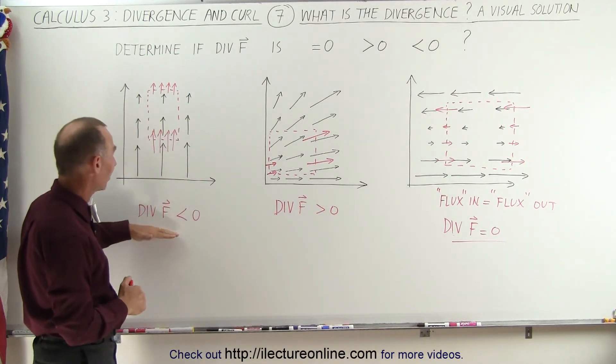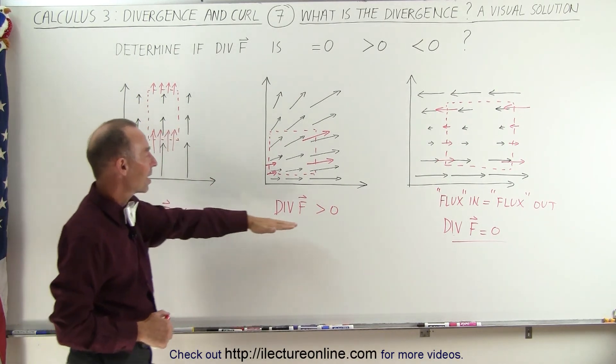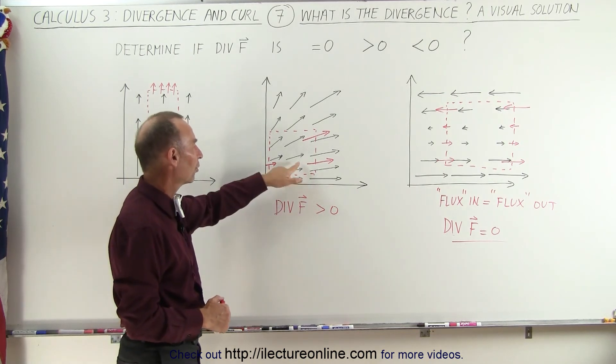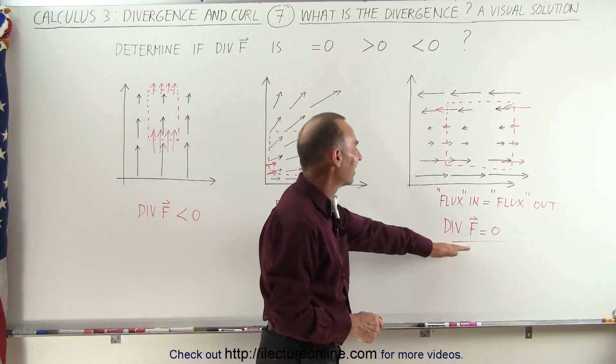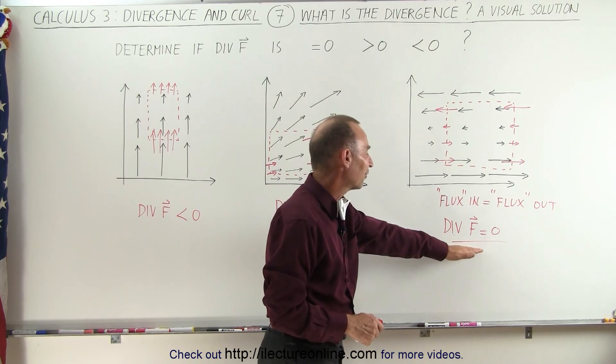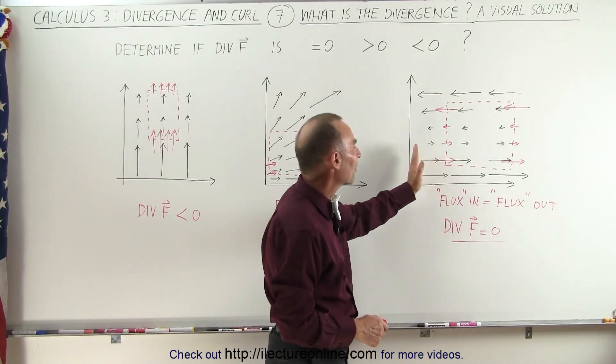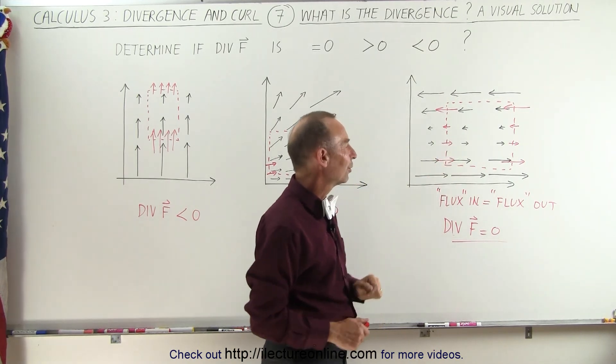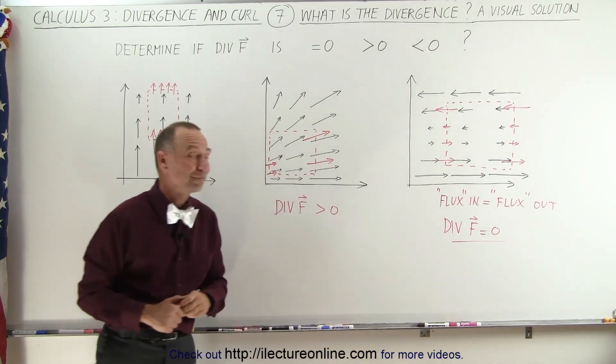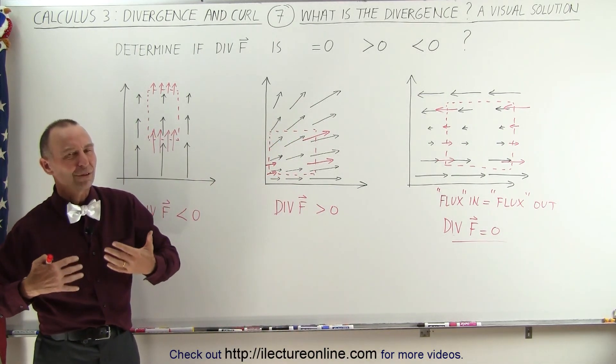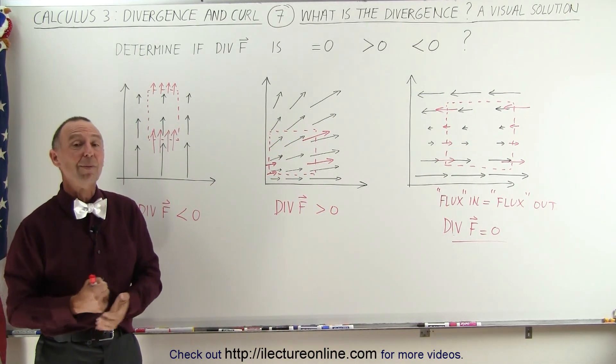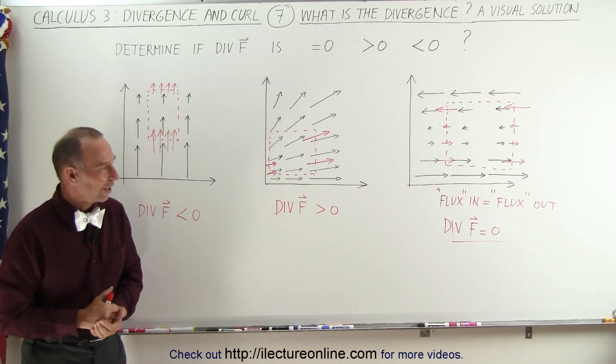So here we have the three cases. The divergence is less than zero, because we seem to lose flux in the box. Here the divergence is greater than zero, because we gain flux. Here the divergence of the vector field is equal to zero, because the amount of flux going in is equal to the amount of flux going out. And hopefully, that will give us a very good sense of what we mean by the divergence of a vector field.